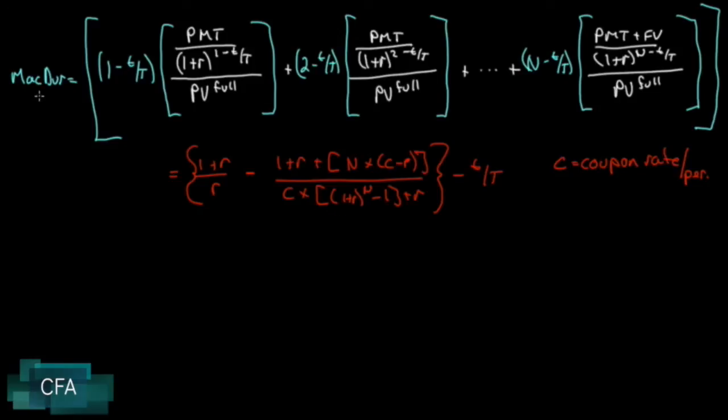So let's go from the Macaulay duration now to something called modified duration, and this is very easy. Remember I said at the beginning everything starts with Macaulay duration. We call this mod dur and it equals Macaulay divided by 1 plus r, that's all it is. So we know that our Macaulay duration was 7.0029 and our r was 10.4, so 1 plus r is 1.104.